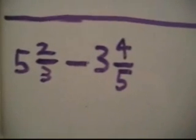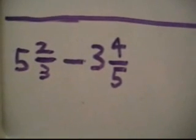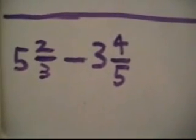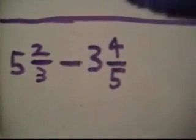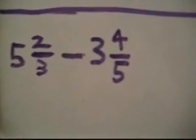The second method is a little bit shorter. The first thing we're going to do is write out our problem and change the mixed numbers to improper fractions. How do we do that?